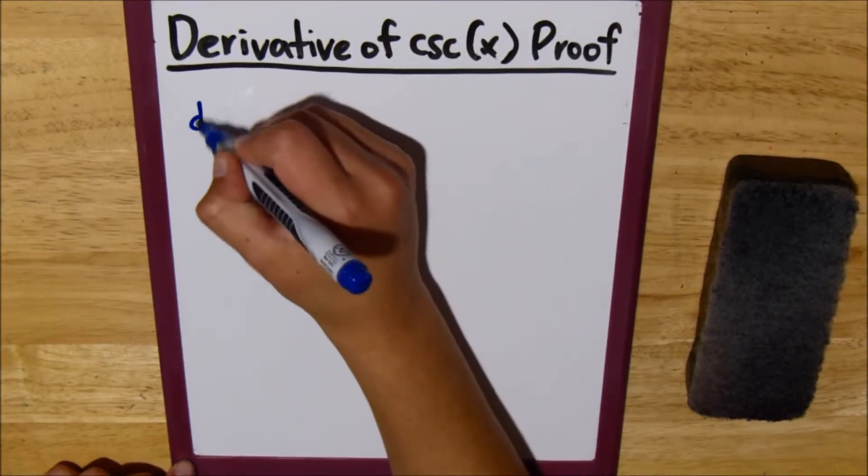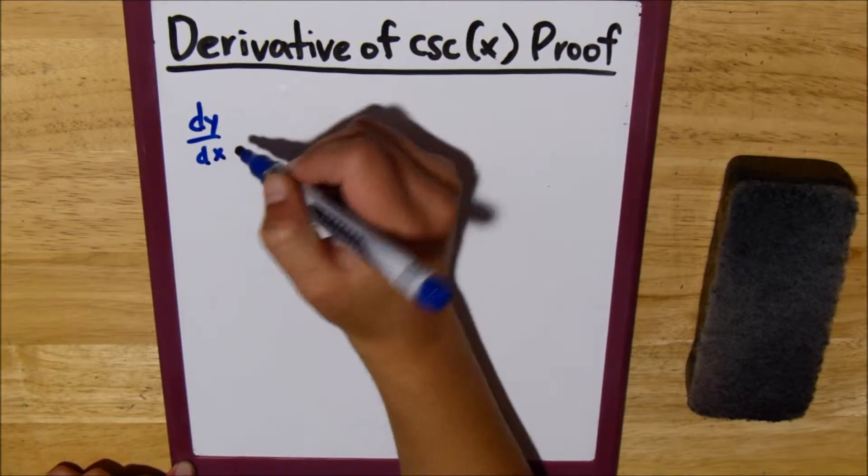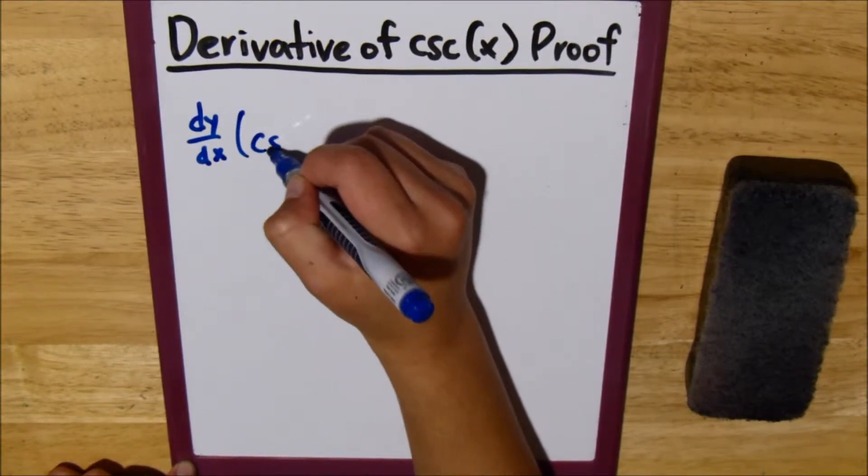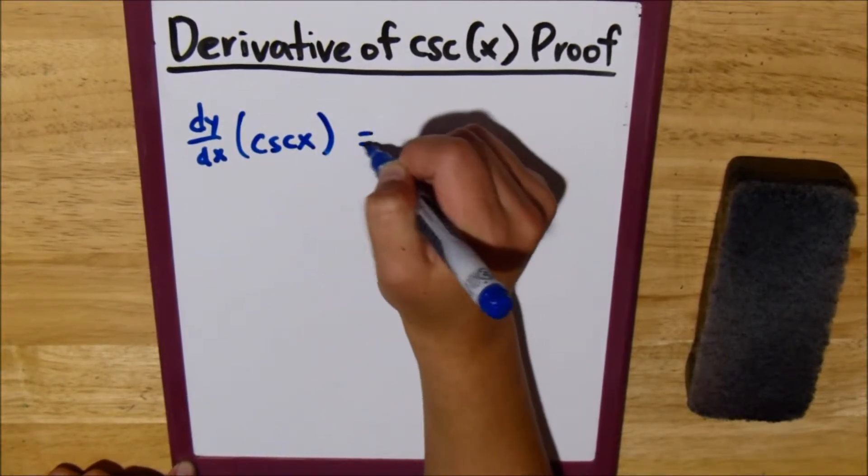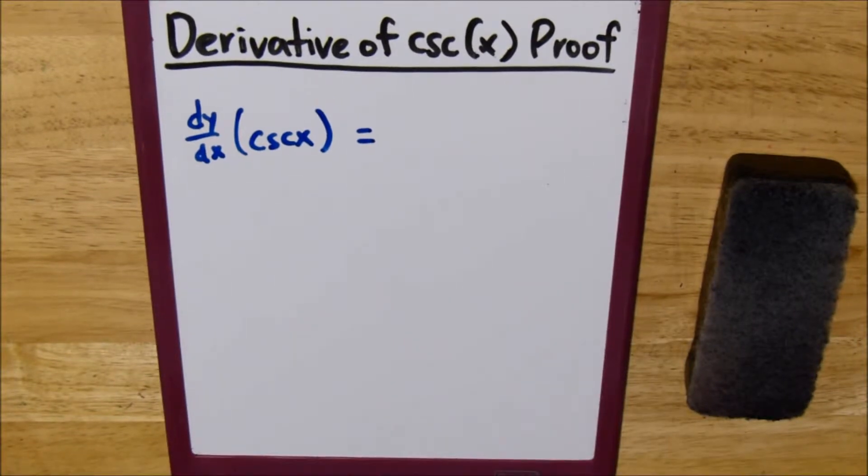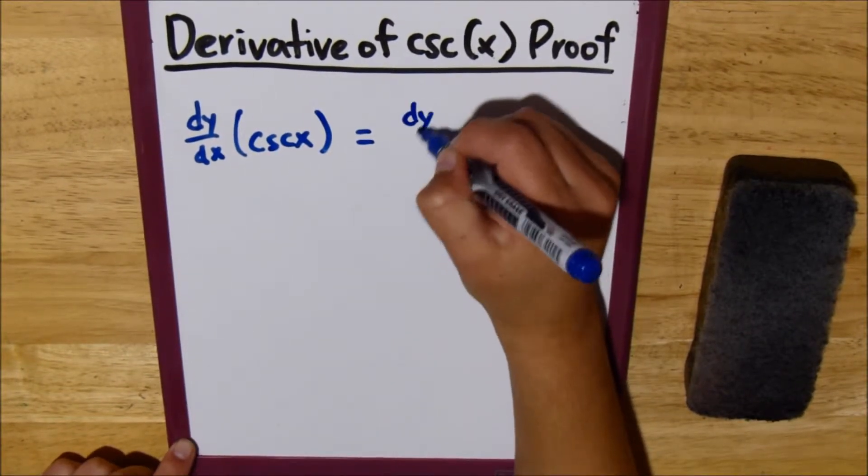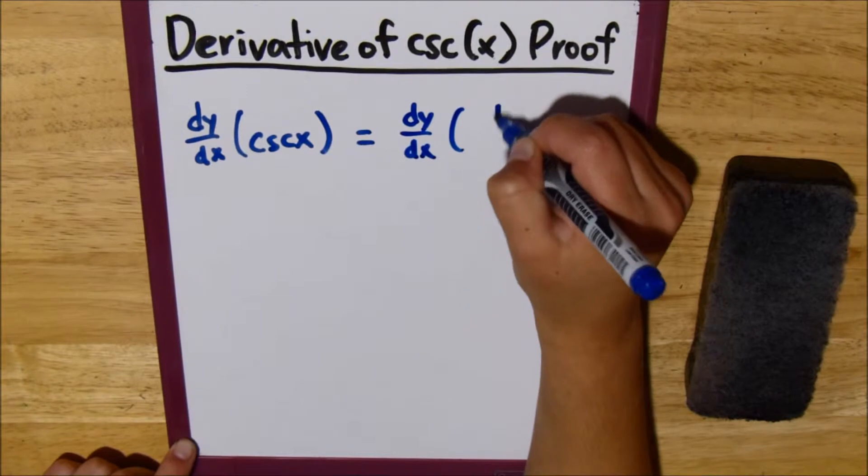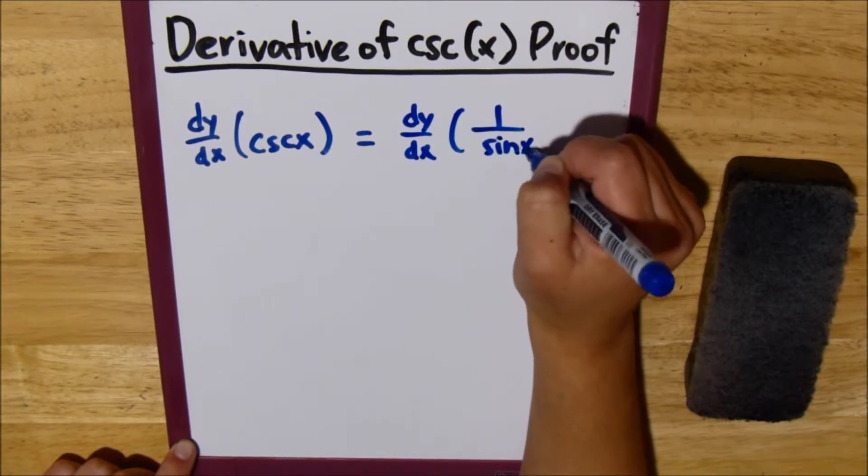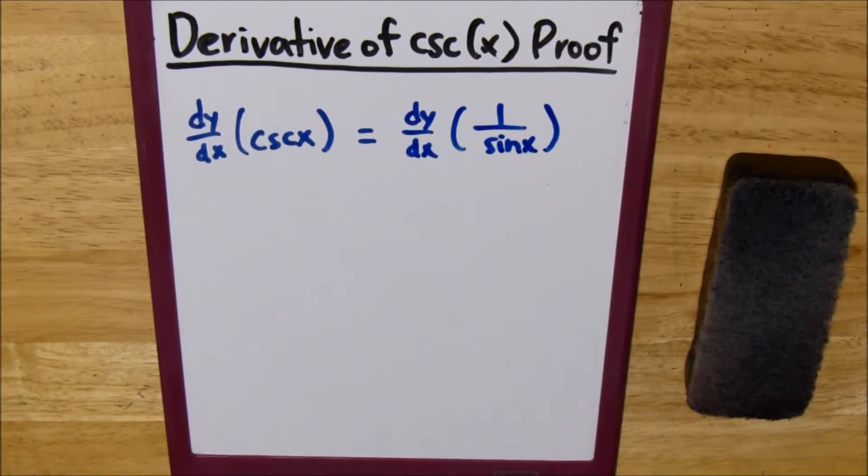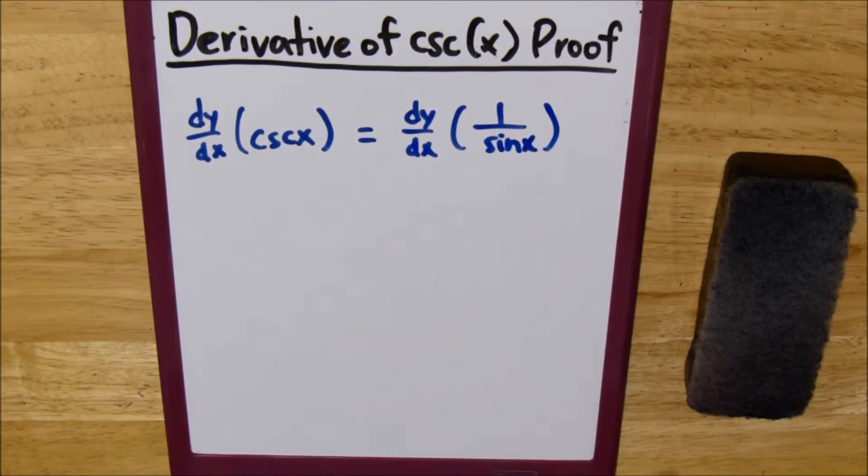So let's start off by just writing dy over dx, also known as the derivative of cosecant of x. Now, we can replace cosecant of x with 1 over sine x. This is one of those sine properties that you should probably know, and if you don't know, you know it now.